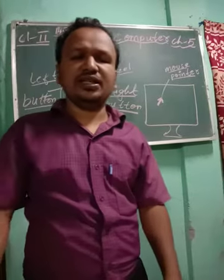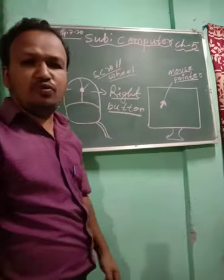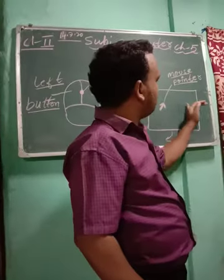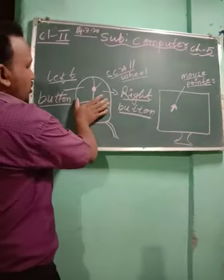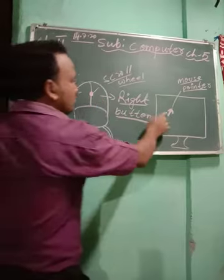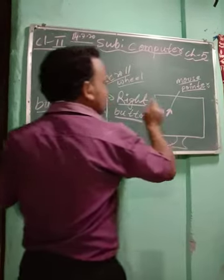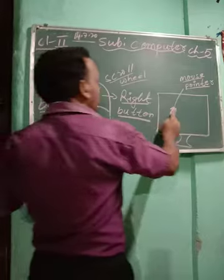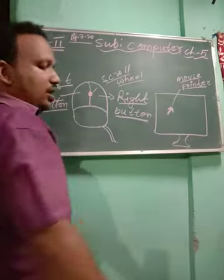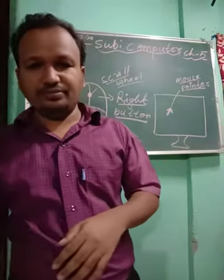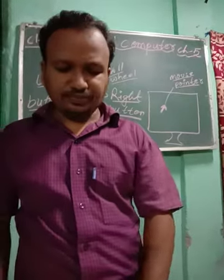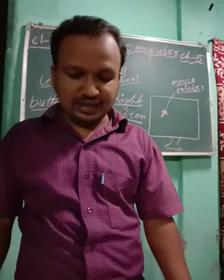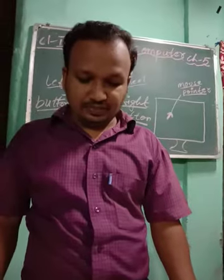The mouse pointer always moves in the same direction on the screen as you move the mouse. If you move the mouse to the right side, the mouse pointer will also move toward the right. If you move it to the left side, the mouse pointer will also move toward the left.